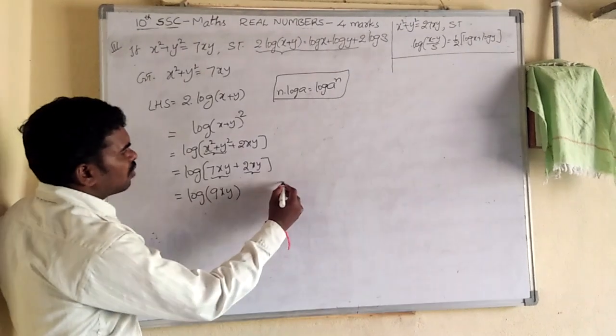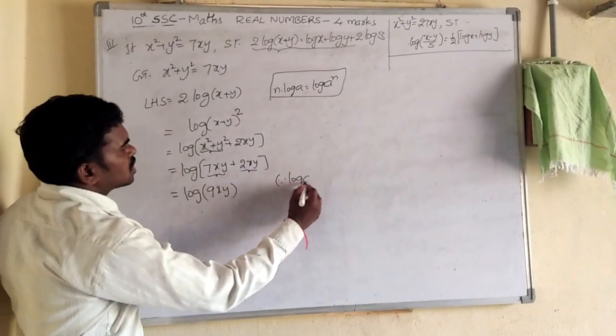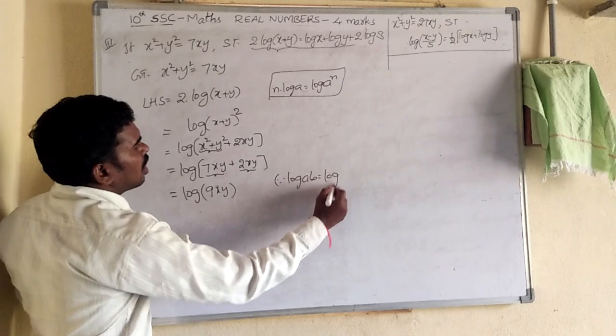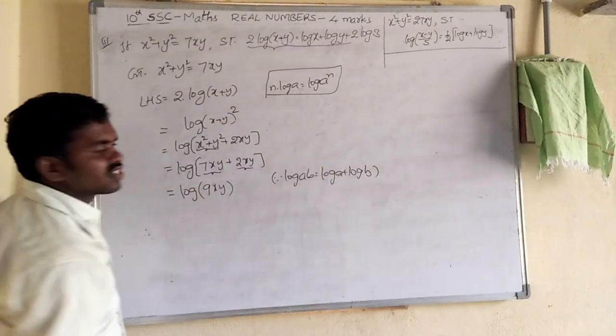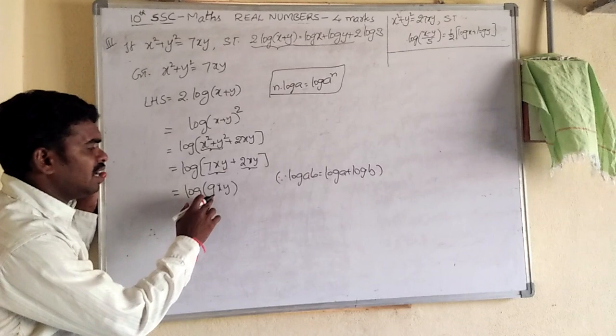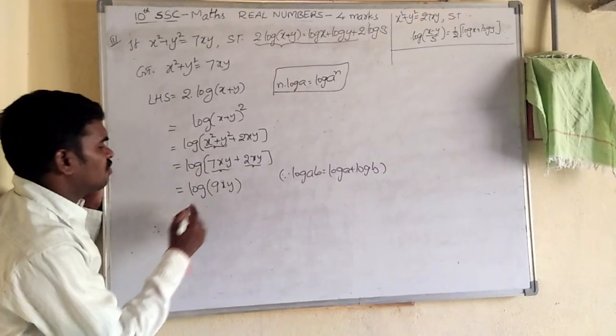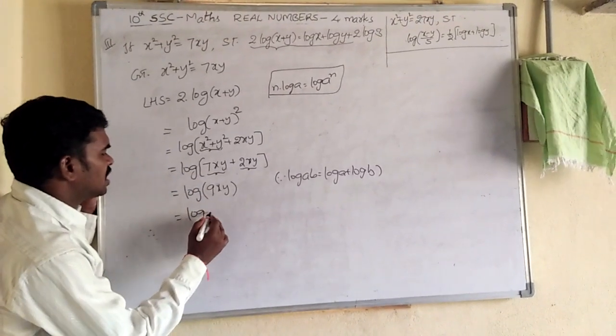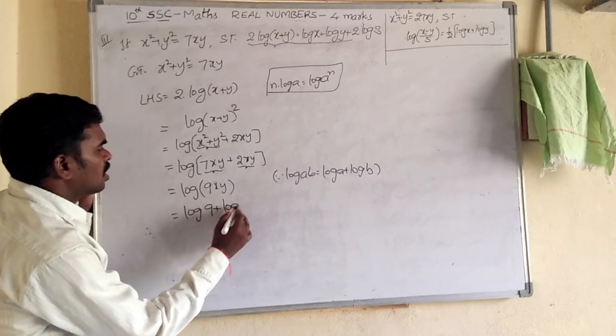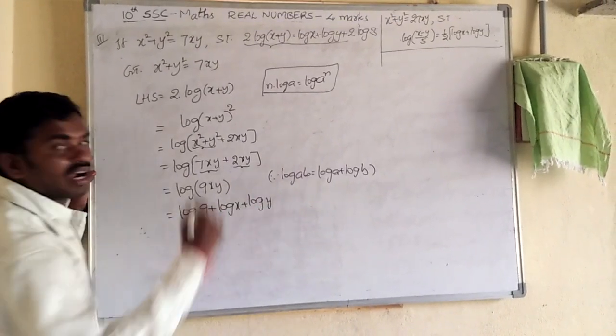So now one more formula we are applying, that is log a to b equal log a plus log b. So according to this formula, log 9 plus log x plus log y, it can be written as, so it can be written as log 9 plus log x plus log y.